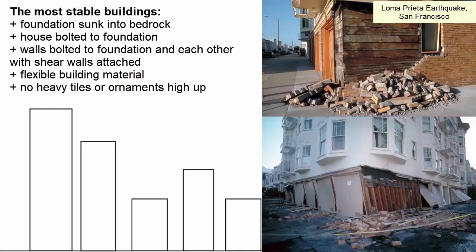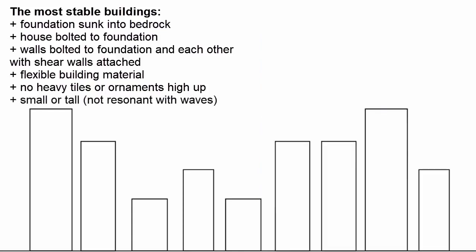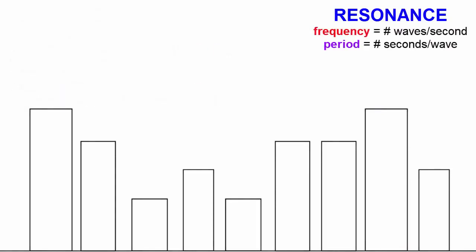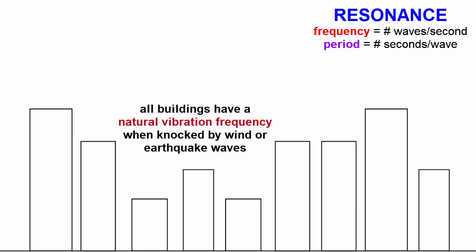Sometimes it's not the way a building is built, but the size of the building that impacts the amount of damage during an earthquake. Resonance is the matching of the period or frequency of an earthquake wave with the natural vibrational period or frequency of an object like a building. All buildings vibrate at a period, number of seconds per vibration, that depends mainly on the height of the building. If the period of an earthquake is the same as the natural period of the building structure, shaking increases more and more with each wave's arrival until the structure falls apart.